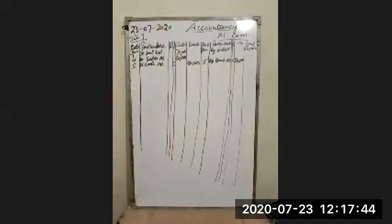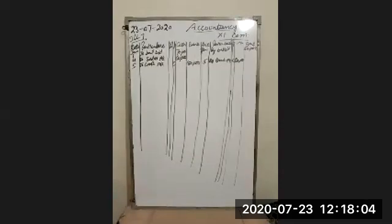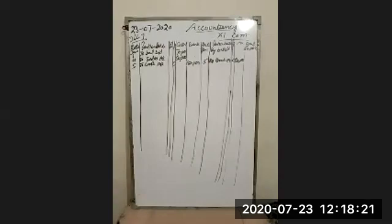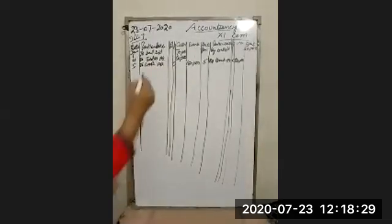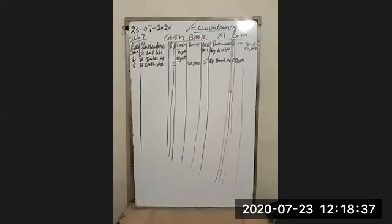January 6th: purchase goods from Mena on credit. Since this is a credit purchase, cash or bank is not affected. It will not be recorded in the cash book because the cash book only records transactions related to cash or bank. This is just a general journal entry. The purchase account is debited and Mena's account is credited. So we will only pass the journal entry for this transaction, not record it in the cash book.